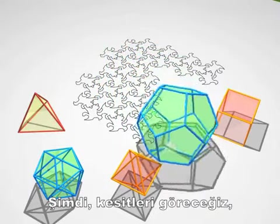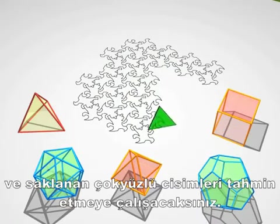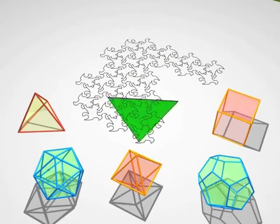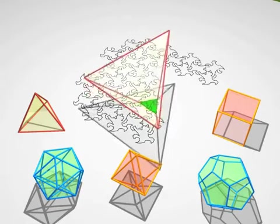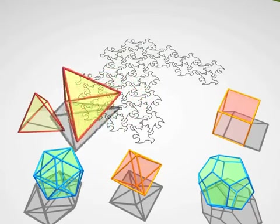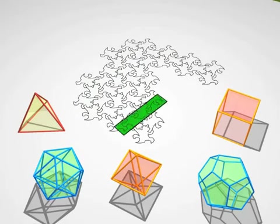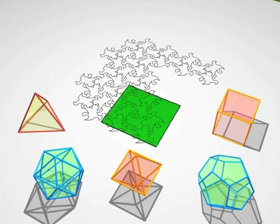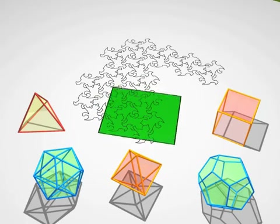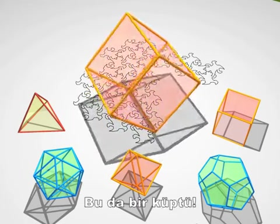Now we're going to show you some cross-sections, and only cross-sections, and you have to guess the polyhedron hiding behind them. That was a tetrahedron. That was a cube.